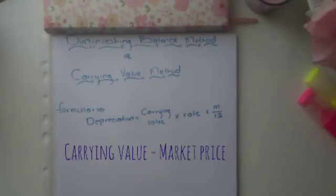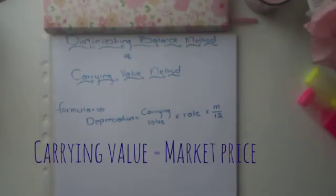The difference in this formula is that instead of original cost, we use carrying value. Carrying value is the market value of the asset, and its formula is always: Carrying Value = Original Cost − Accumulated Depreciation.